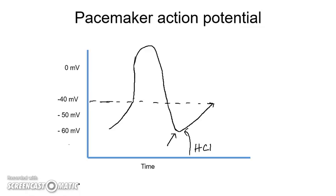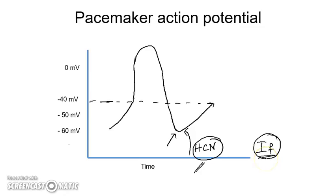The currents involved in the pacemaker potential include, first, the hyperpolarization-activated cyclic nucleotide-gated cation channel — the HCN channel. This is also referred to as the funny sodium channel or funny current. Unlike most voltage-gated channels that open during depolarization, HCN channels open during hyperpolarization, allowing sodium ions to enter. This is referred to as the 'funny' behavior of these channels.